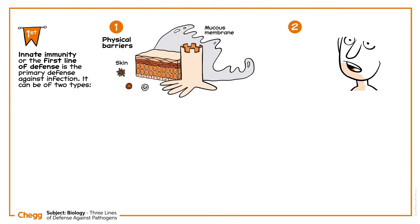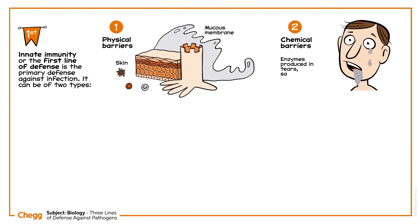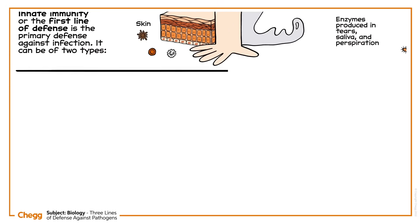On the other hand, chemical barriers — enzymes produced in tears, saliva, and perspiration — can disrupt the cell walls of the microbes.